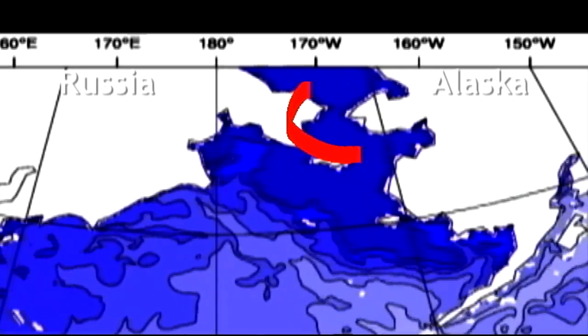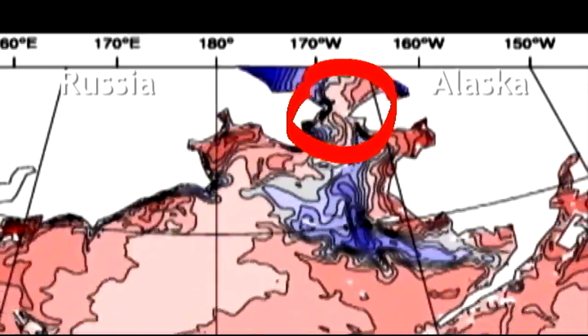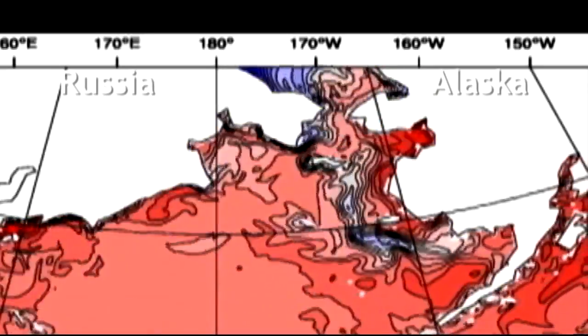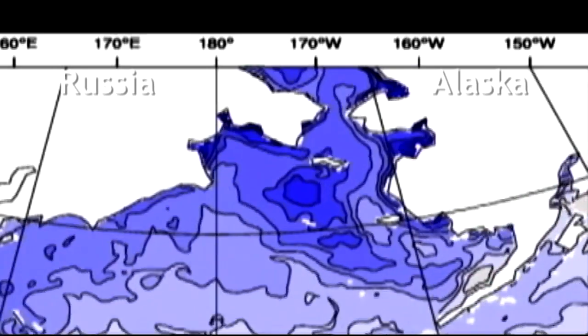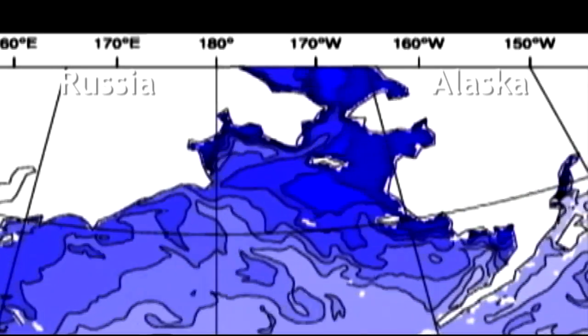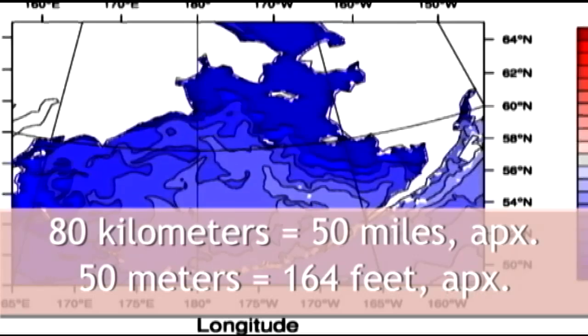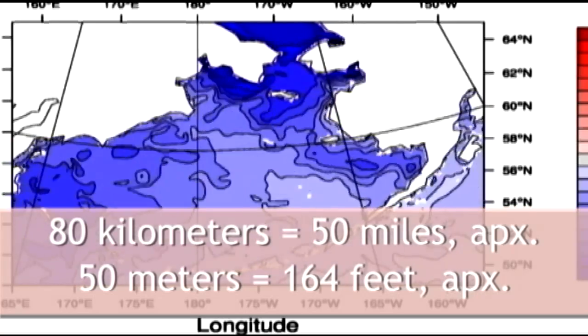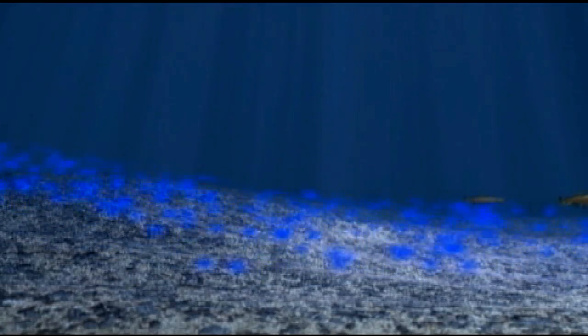Bering Strait is the choke point between the Pacific Ocean and the Arctic Ocean, and it's at a critical juncture for Earth's climate processes. It's a really important point for the globe as a whole. It's about 80 kilometers wide and about 50 meters deep — shallow and narrow. It's a short little jaunt between Asia and North America.